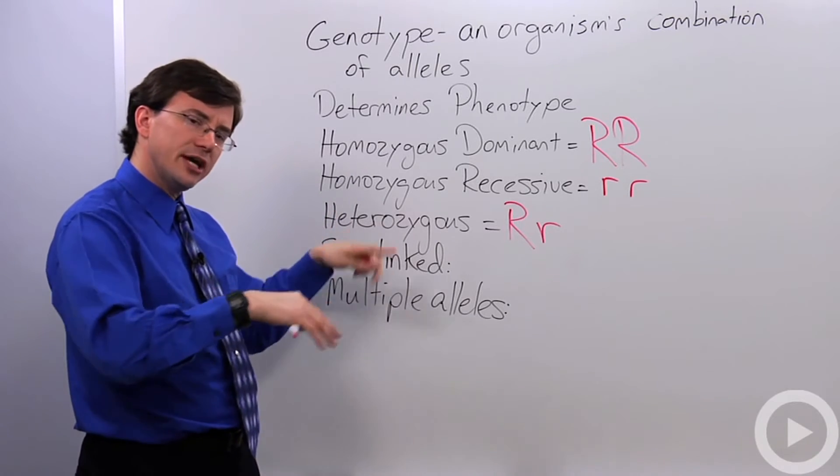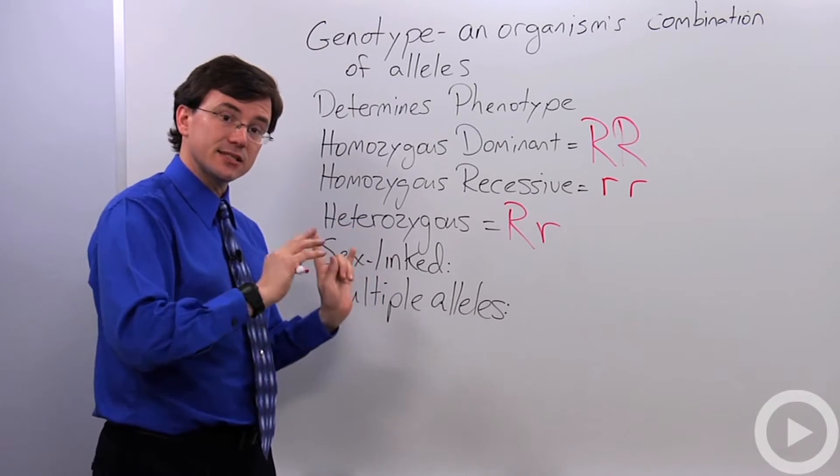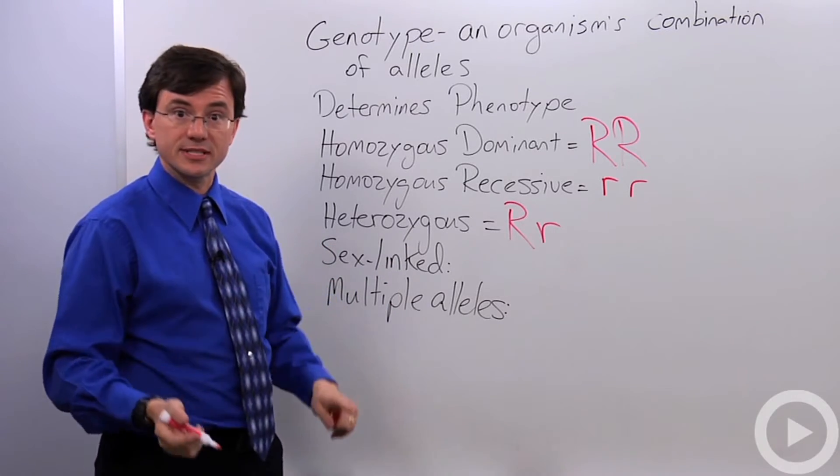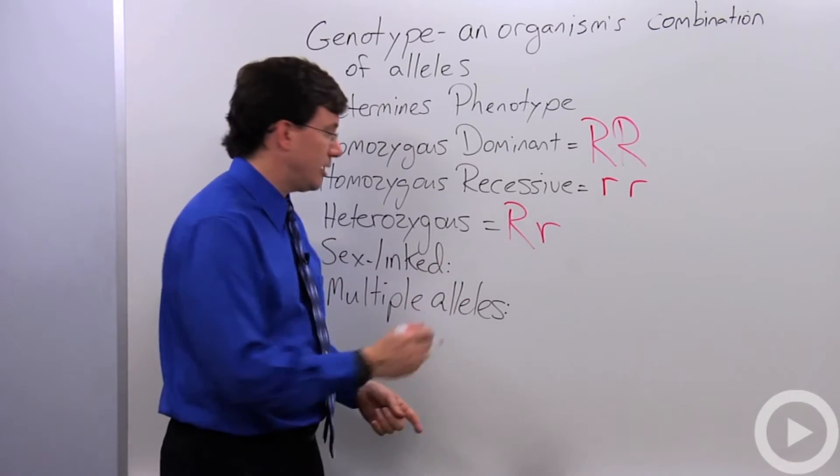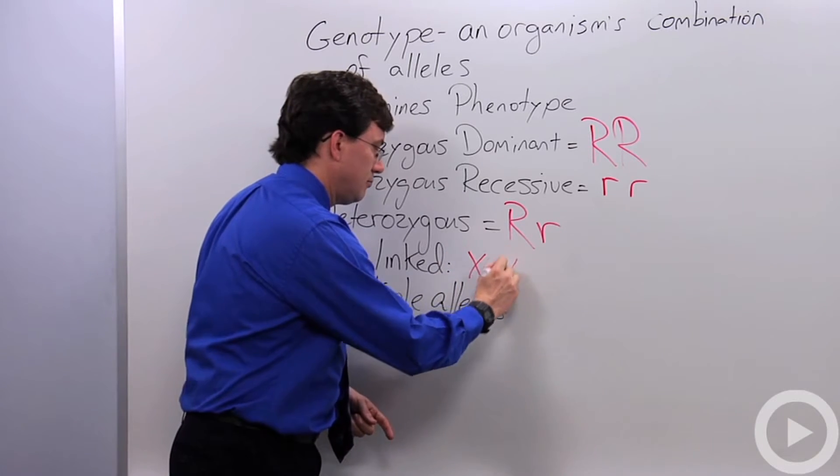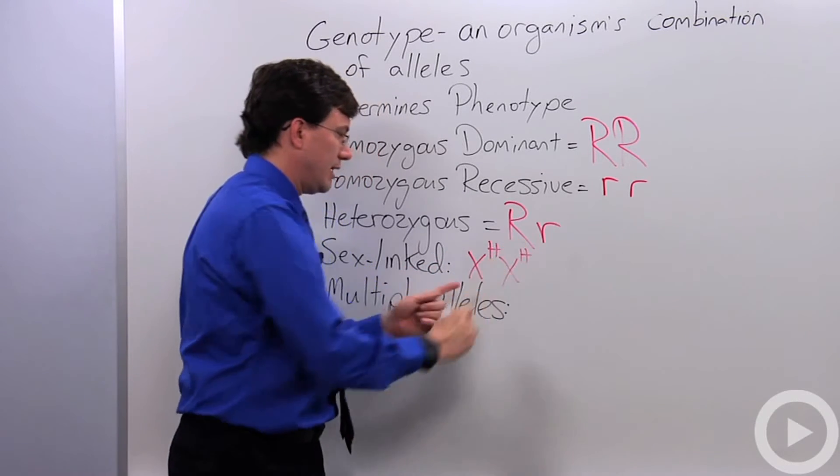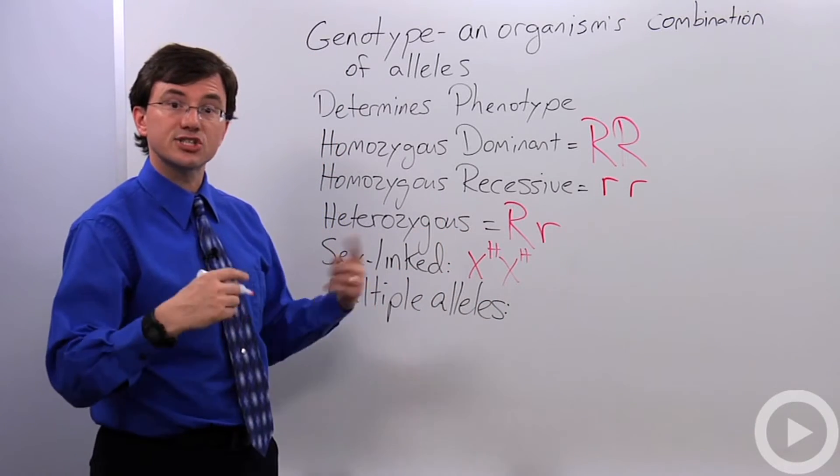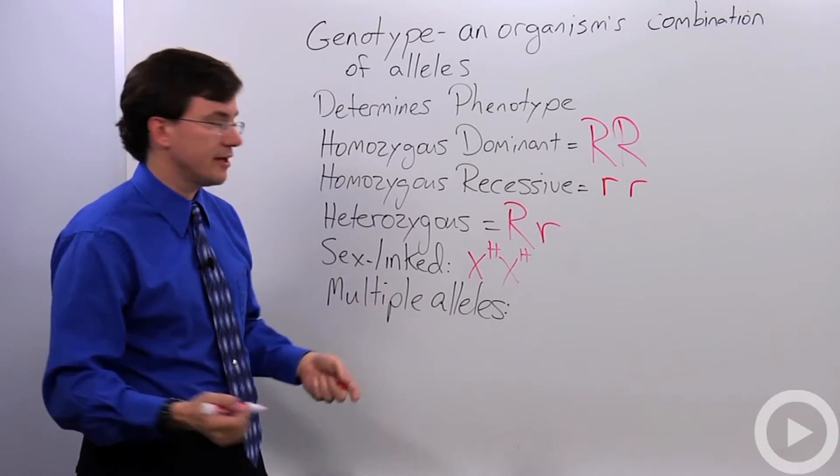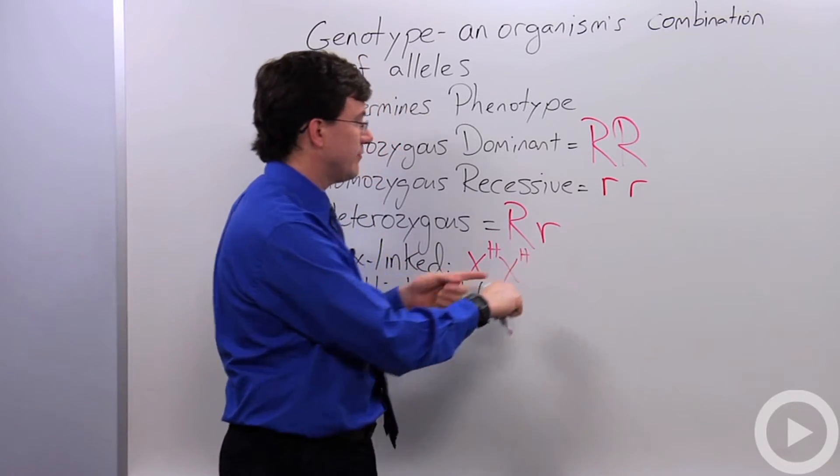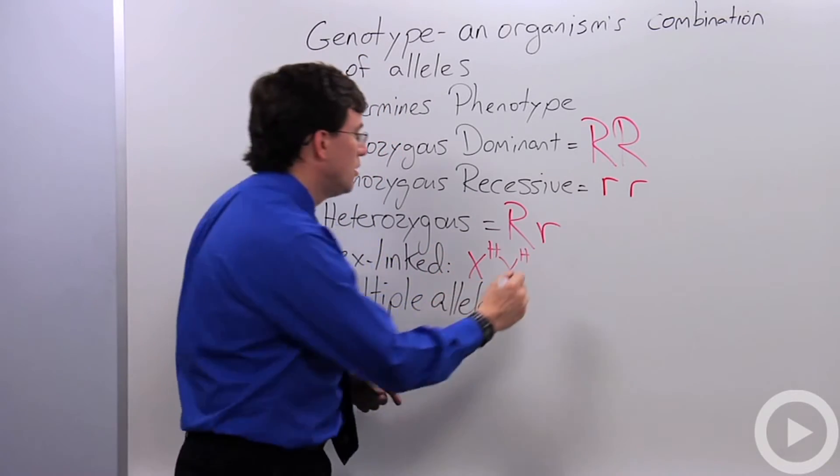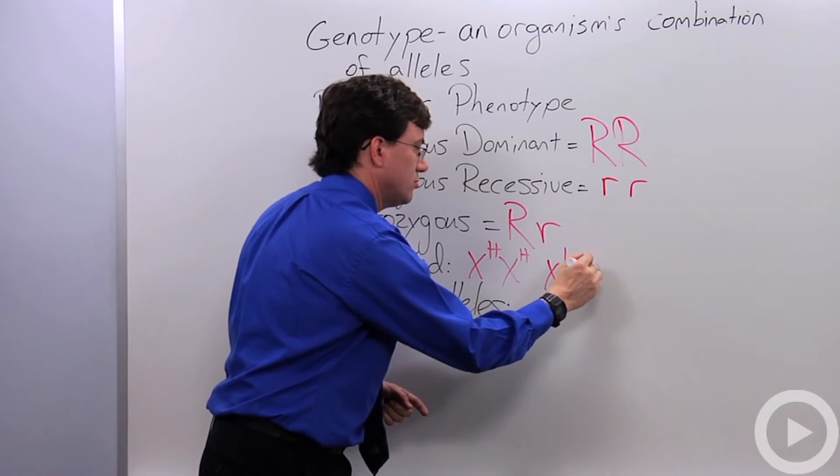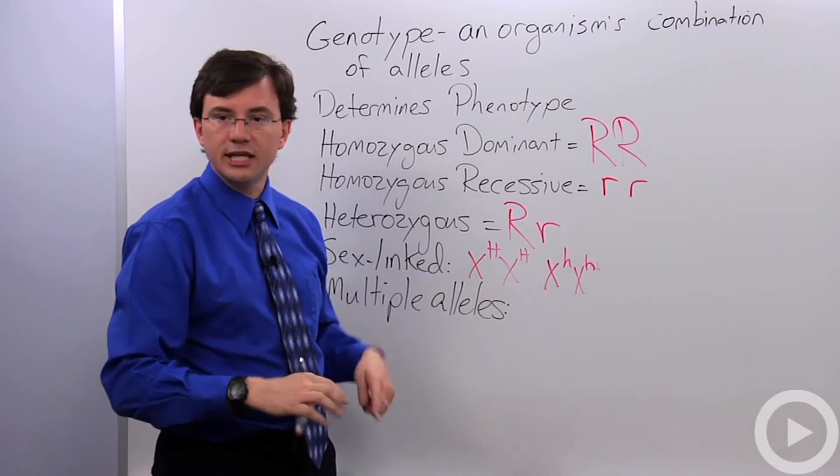It gets a little bit more complicated when you're looking at things like sex-linked traits. With a sex-linked trait, you have to include the sex chromosome itself. So a woman can be X big H, X big H. This would be a woman who's homozygous dominant for hemophilia, say for example, or actually she'd have normal blood. She could be homozygous recessive and actually show the hemophilia trait.